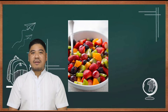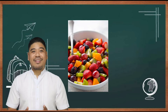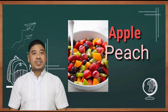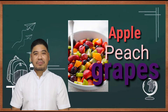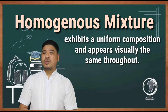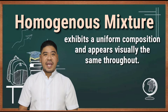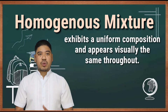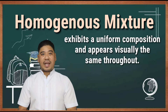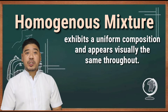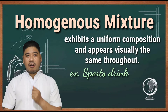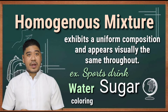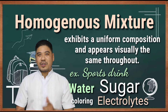Another example would be fruit salad, which contains different fruits such as apple, peach, grapes, and more. A homogeneous mixture, also called a solution, exhibits a uniform composition and appears visually the same throughout. An example of a solution is a sports drink consisting of water, sugar, coloring, flavoring, and electrolytes mixed together uniformly.